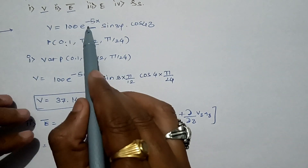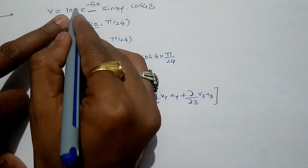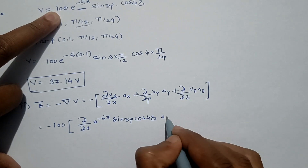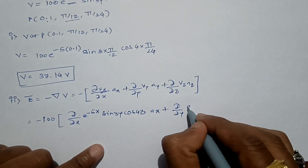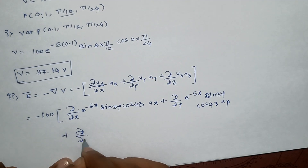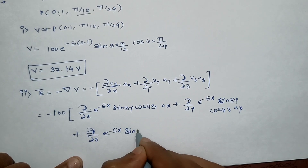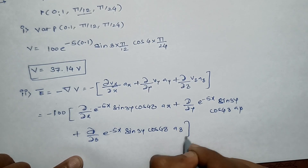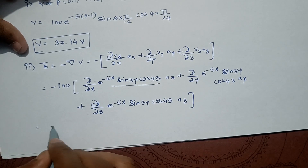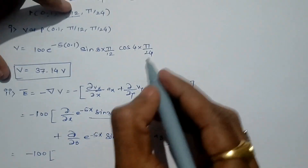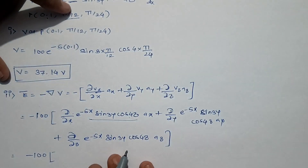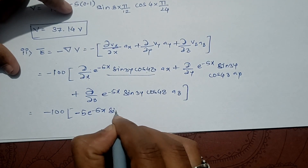We take the gradient: E⃗ = -100 multiplied by [∂/∂x(e^(-5x)·sin(3y)·cos(4z))·ax + ∂/∂y(e^(-5x)·sin(3y)·cos(4z))·ay + ∂/∂z(e^(-5x)·sin(3y)·cos(4z))·az]. Differentiating with respect to x: sin(3y) and cos(4z) are constant, so differentiating e^(-5x) gives minus 5·e^(-5x), with the remaining terms unchanged.